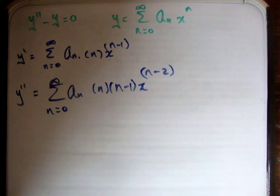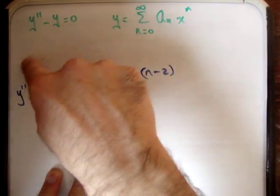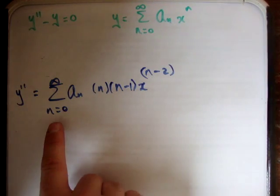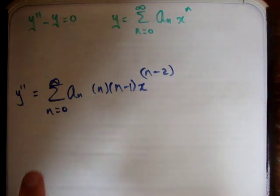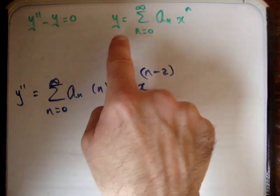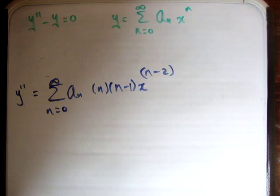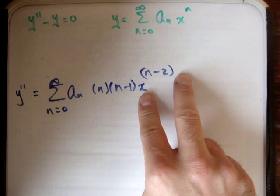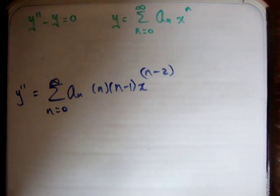Now, in order to solve this equation, or any equation involving power series, you need each of these terms to begin at the same spot in the series and also at the same power on their variable. In this case both y double prime and y start at n equals 0 and finish at infinity. However, y double prime has x to the n minus 2, whereas y has x to the n, so we need to shift our indices.